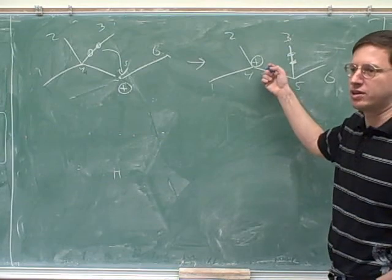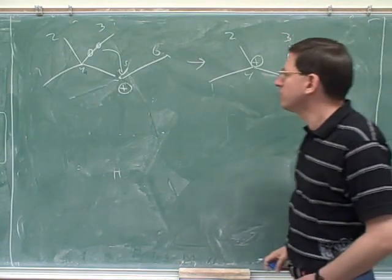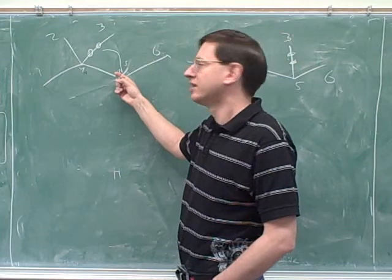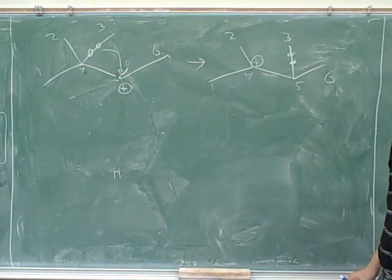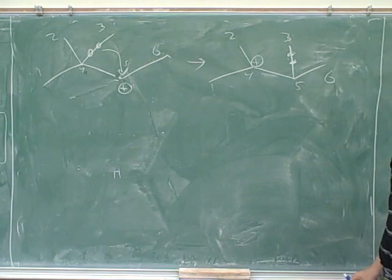So this is a different type of rearrangement. You can also have this. Now, does this seem reasonable? Well, was this primary, secondary, or tertiary? Secondary. And what type of carbocation is this? Tertiary. So that would definitely be a favorite rearrangement. This is certainly the kind of thing that we would expect might happen here.